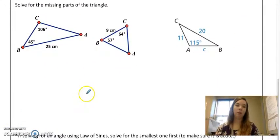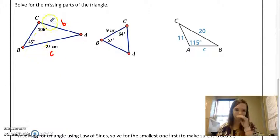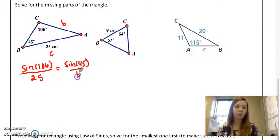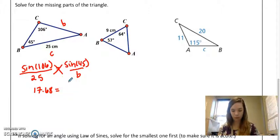Solve for the missing parts of the triangle. Here straight across this is little c and straight across this will be little b. Let's go ahead and find this side. If I have the sine of 106 over 25, that's equal to the sine of 45 over b. Now I can cross multiply: 17.68 equals 0.96b.